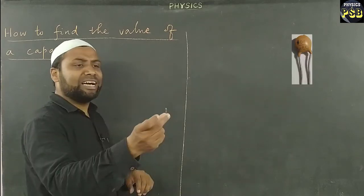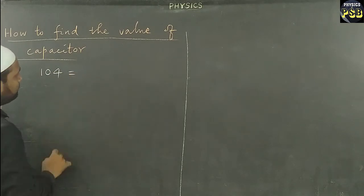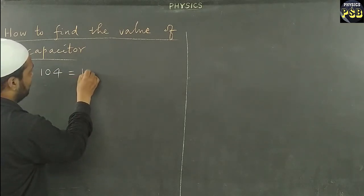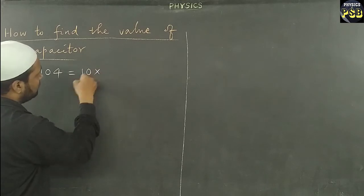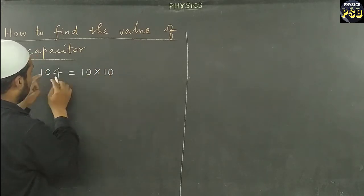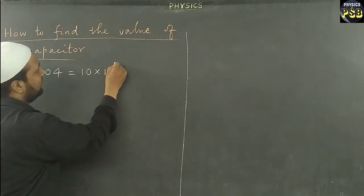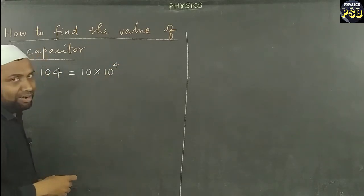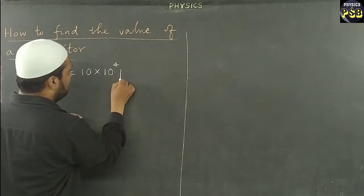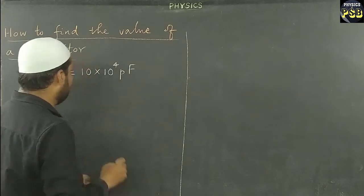In this ceramic disc capacitor, 104 is mentioned. 104 means it has to be written this way: 10 × 10^4. First two digits are written as such, whereas the last digit is raised to the power of 10. Then it is mentioned in picofarad.